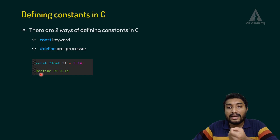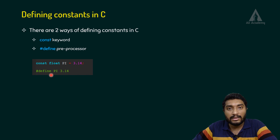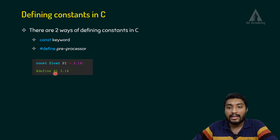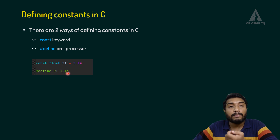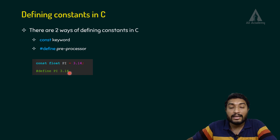The second method is hash define — the preprocessor command used to define constants. Using hash define, we write the variable name pi and assign the value 3.14.